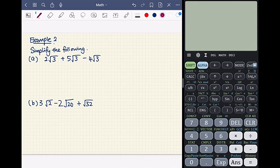In example 2A, we have to simplify 2 root 3 plus 5 root 3 minus 4 root 3. Think of it as we factorize out root 3 and then essentially we're just taking 2 plus 5 minus 4, which is just 3. So we have our final answer, 3 root 3.